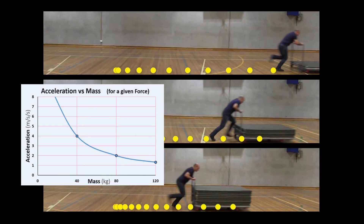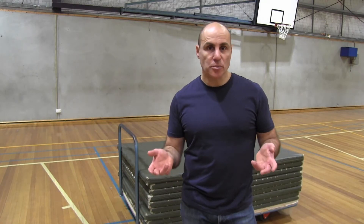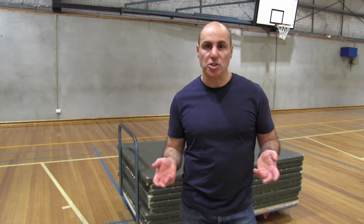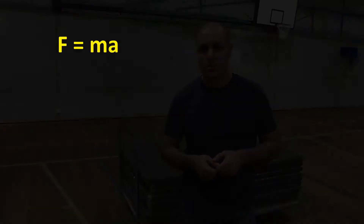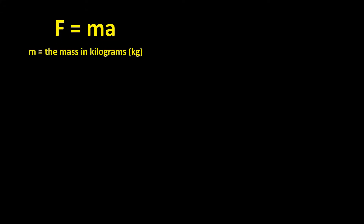This graph shows the relationship. As the mass gets bigger, the acceleration gets smaller. This is called an inverse relationship. We can express the relationship between force, mass and acceleration in a single equation: F equals MA. In this equation, M equals the mass in kilograms, A equals the acceleration in meters per second per second, or meters per second squared, and F equals the force that acts on the object in a unit called the Newton, which is given the symbol N.